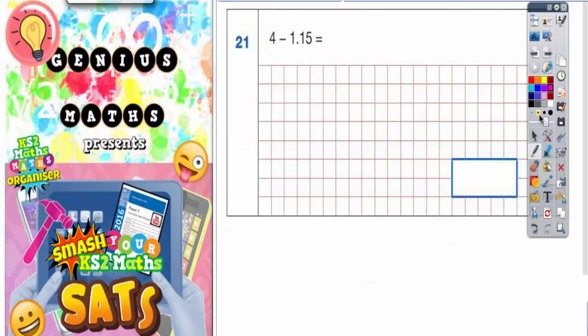21. 4 subtract 1.15. Now there's a couple ways you could do this. You could pretend it's money and you could think of 4 pounds subtract 1 pound 15.